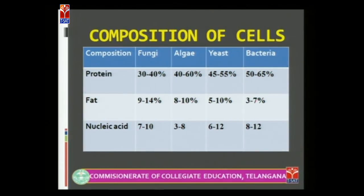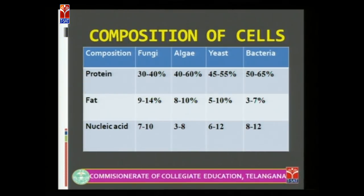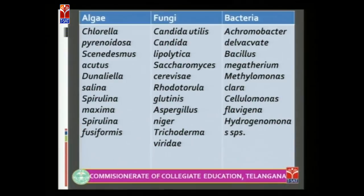Now let us look at the composition of cells. Fungi, algae, yeast, and bacteria have different compositions of proteins, fats, and nucleic acids. As seen in the table, protein content is highest in bacteria, fat is highest in fungi, and nucleic acid content is also highest in bacteria. These are some examples of algae, fungi, and bacteria that can be used as single cell proteins.